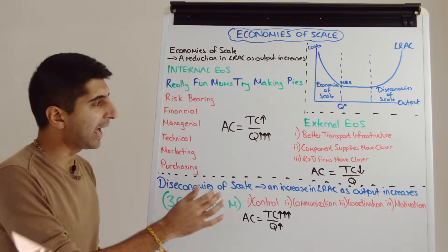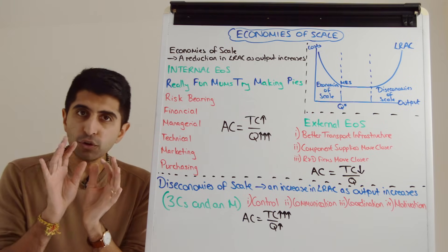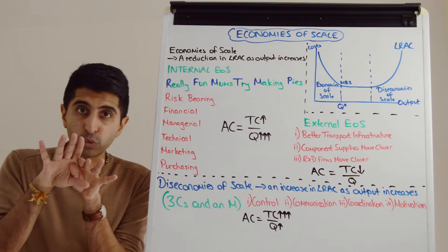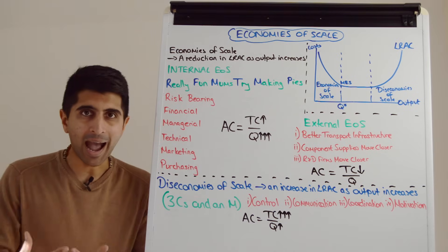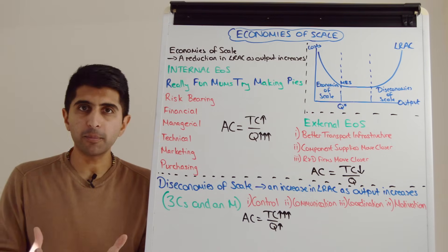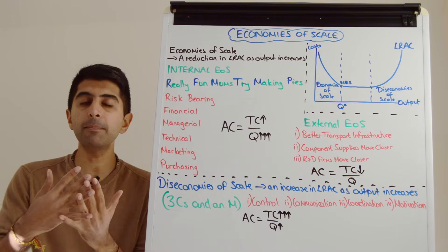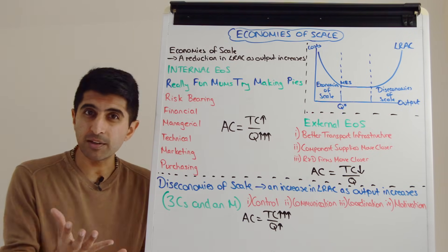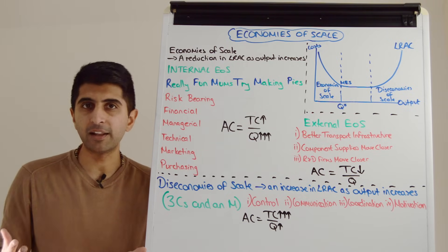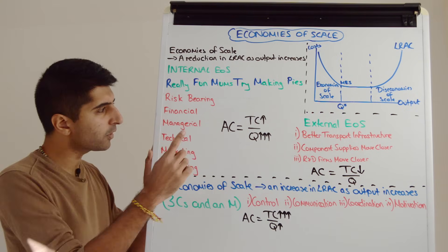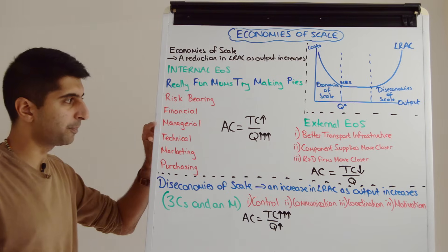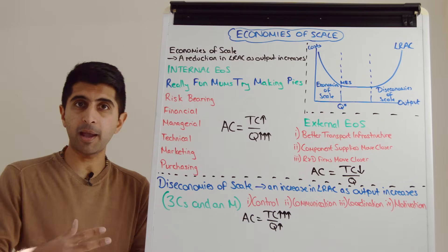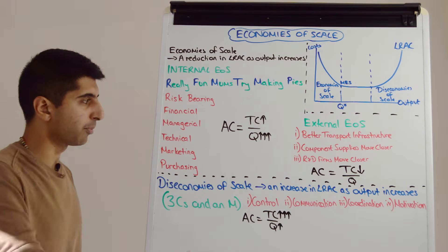We need to explain each one and link each one to lower average costs. In truth they all work the same way — total costs will be rising in each case but quantity will be rising much faster, and therefore average costs will be decreasing as a result. Managerial economies of scale basically says that as a firm gets larger they can employ specialist managers who can monitor the productivity of the workforce and boost it. They also bring specialist skills that help boost productivity in the company. So productivity rises, quantity rises much faster than total cost, hence bringing down average cost.